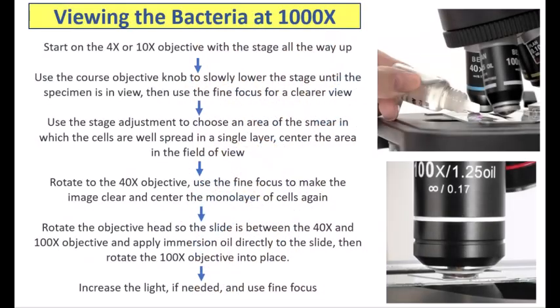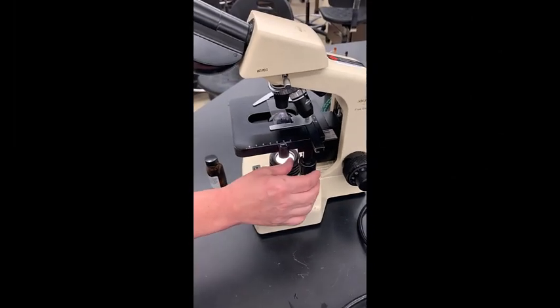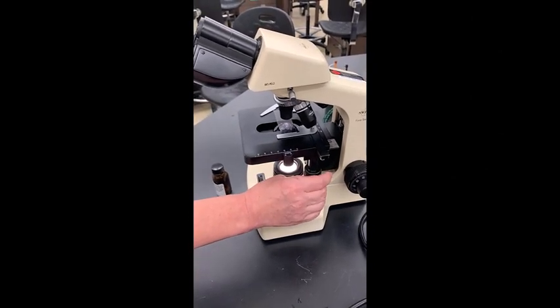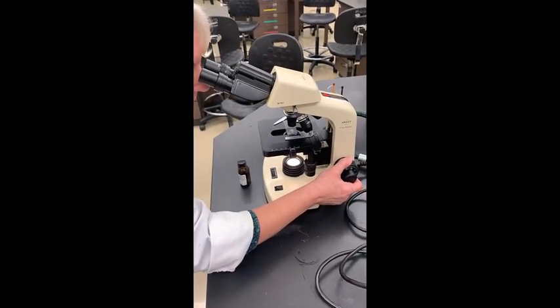Now place the stained smear on the microscope stage bacteria side up and view on the oil immersion. As a refresher, when using the microscope, always start on the 4x or 10x objective. Start with the stage all the way up and use the coarse objective knob to slowly lower the stage until the specimen is in view.